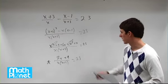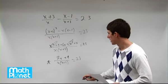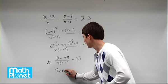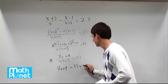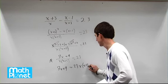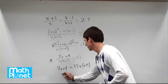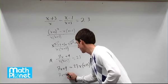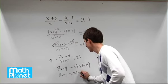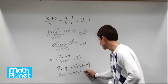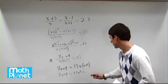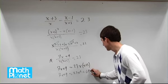So let's multiply both sides by this denominator here. So that just gives us 7x plus 9 equals 23 times x times x plus 3. So we can multiply this through. That gives us 7x plus 9 equals 23x squared plus 23x times 3, which is 23 times 3 is 69x.